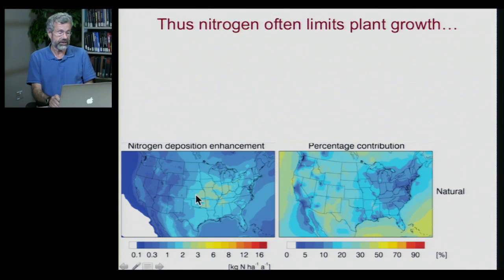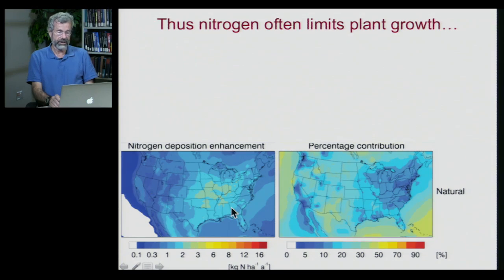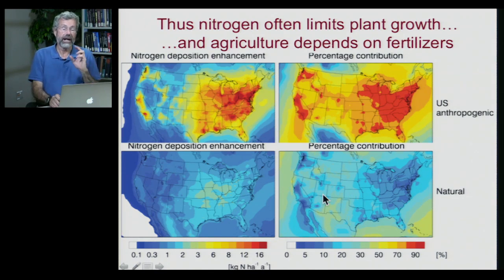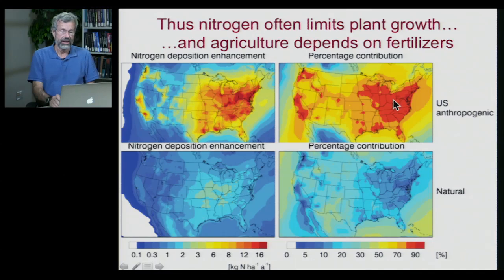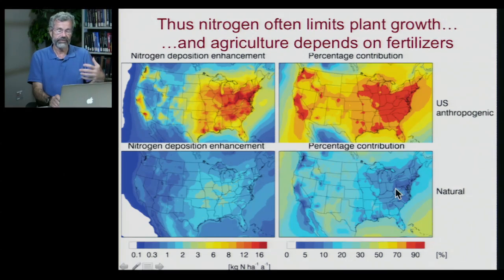This map across the U.S. shows that in places like the Midwest, nitrogen deposition is higher than elsewhere, but it's never that much. Looking at agricultural practices, we add a lot of fertilizer rich in nitrates and ammonia — on the order of dozens of kilograms, hundreds of pounds per hectare every year. As a percentage of contribution to nitrogen in the soil, it's mostly coming from fertilizer, with natural systems adding only a small amount.